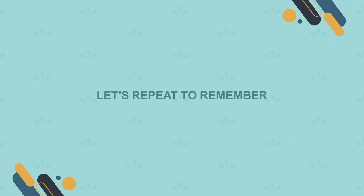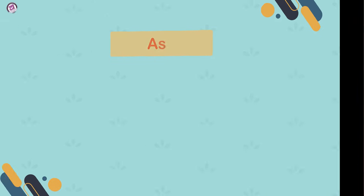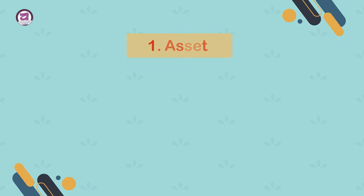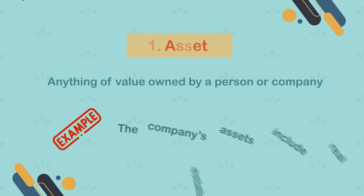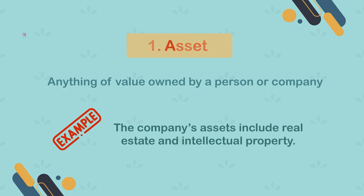Let's repeat to remember. 1. Asset. Anything of value owned by a person or company. Example: the company's assets include real estate and intellectual property.